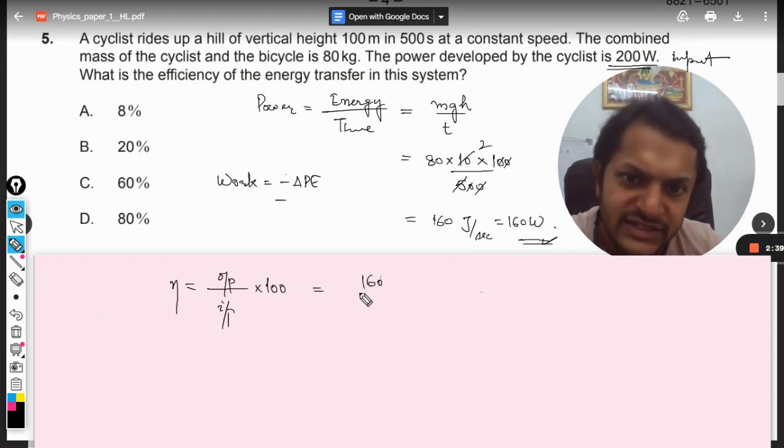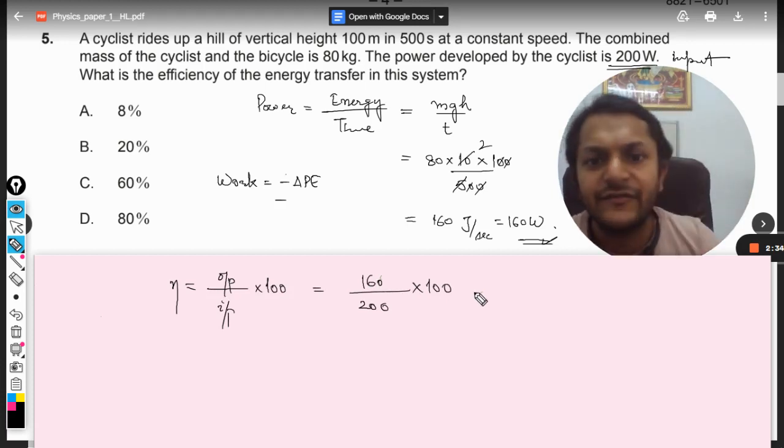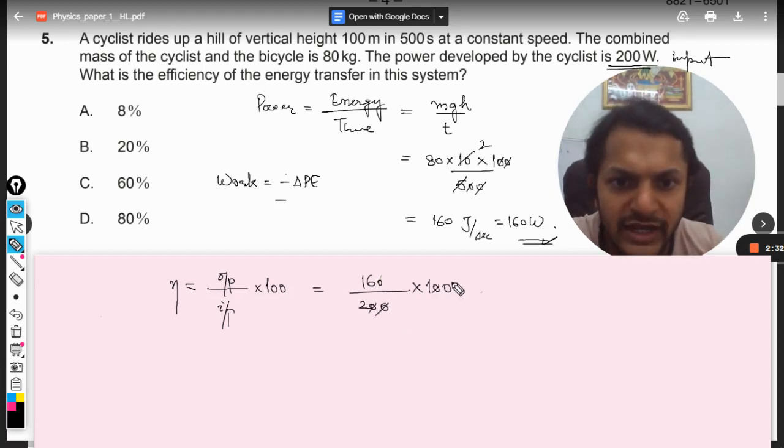So this is the input power and this is the output power. By efficiency we mean the power output divided by input, so the output is 160 which is less than the input that is 200. And we will find the efficiency here, so it is coming out to be 80%.